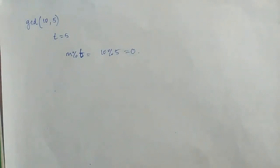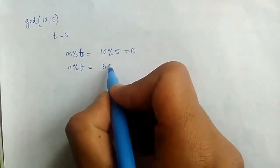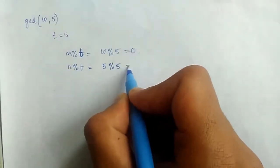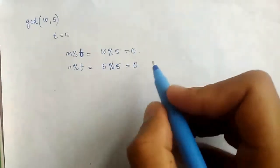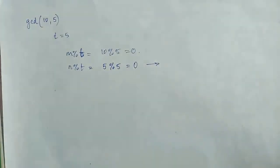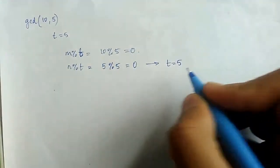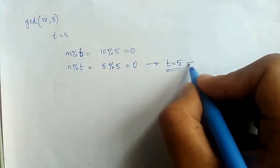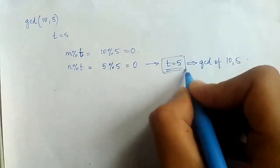If it weren't equal to 0 then we would have to go to the fourth step. But here it is equal to 0, so we move on to the third step. In the third step we perform n mod t. Since n is equal to 5 and t is also equal to 5, the remainder is 0, so we return the value of t as the GCD. Therefore the GCD of 10 and 5 is equal to 5.